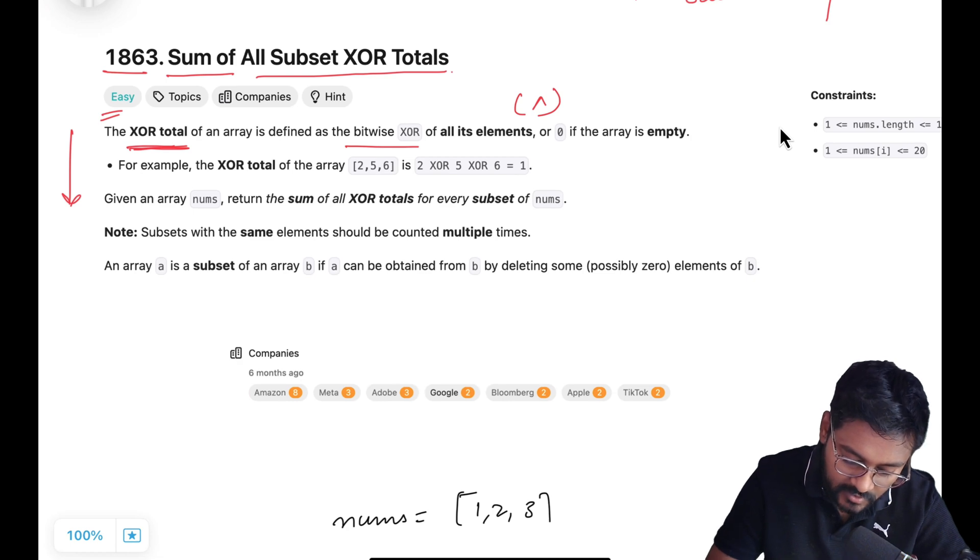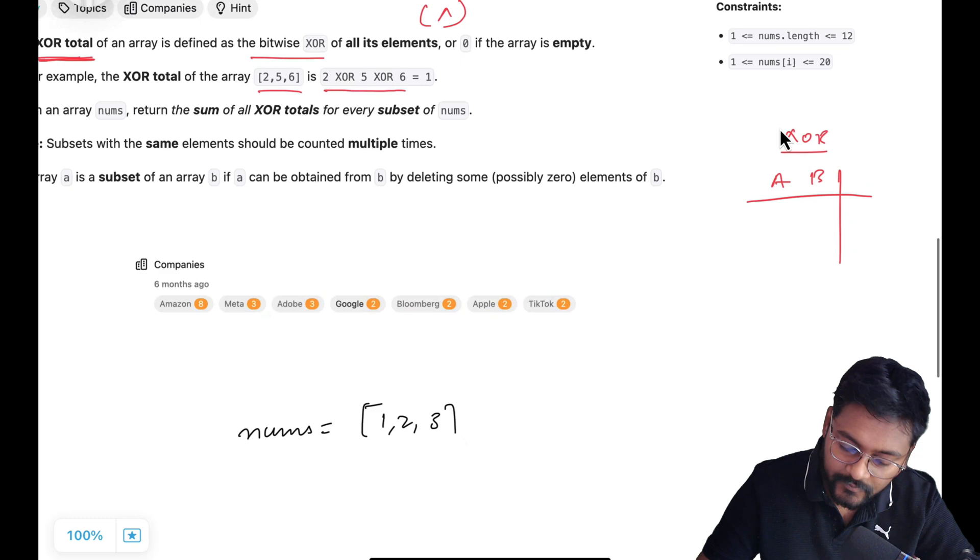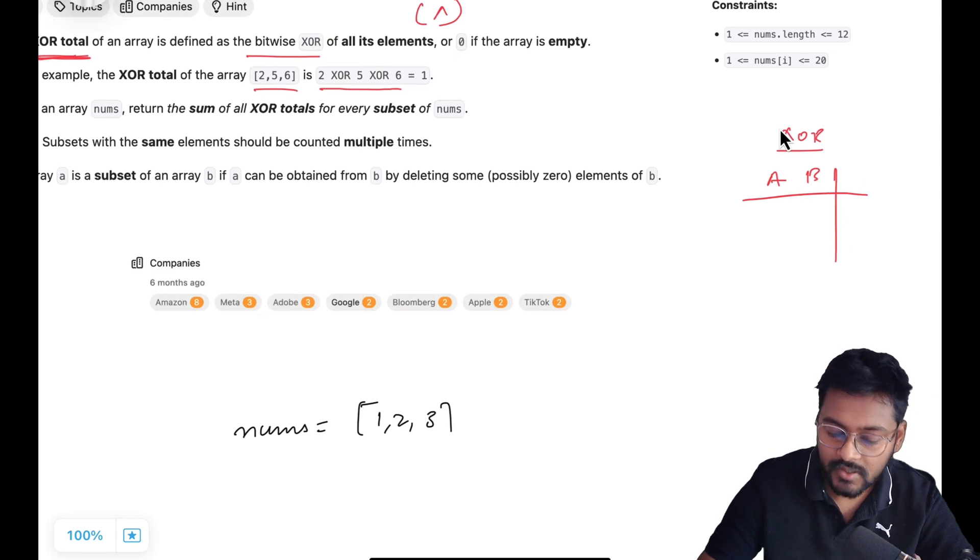They've given an example: 2 XOR 5 XOR 6 equals 1. If you are not aware of the XOR operator, it takes 2 values. What are the 2 possibilities? In computer we only have 2 possibilities: no current, there is current.